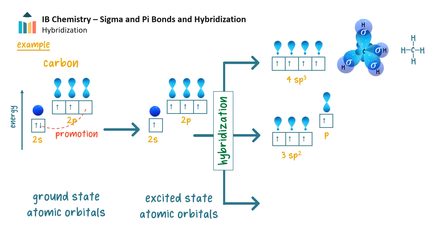When the s orbital and two of the p orbitals mix, they form three equivalent sp2 hybrid atomic orbitals of equal energy. And one of the p orbitals remains unhybridized and is at slightly higher energy.